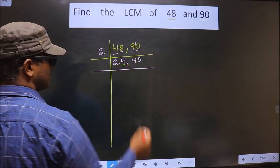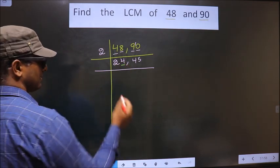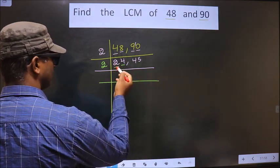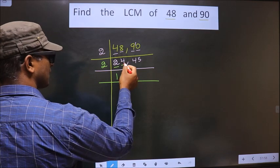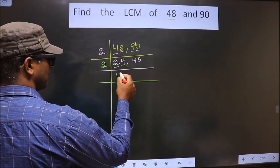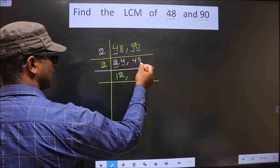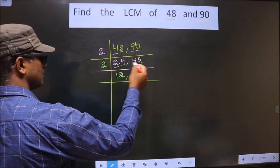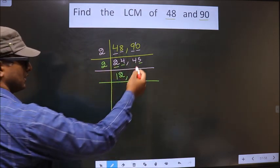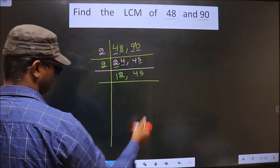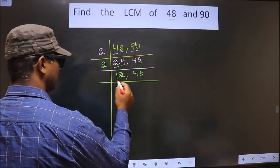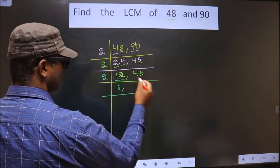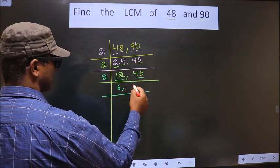Now, for this number, the last digit is 4 which is even. So we take 2 here. The first number is 2 — when do we get 2 in the 2 table? 2 times 1 is 2. The next number is 4 — 2 times 2 is 4. Here the last digit is 5 which is not even, so this number is not divisible by 2. You write it down as it is. Here we have 12 — 12 is nothing but 2 times 6 is 12. 45 is not divisible by 2, so you write it down as it is.